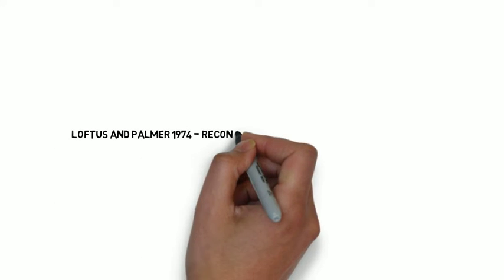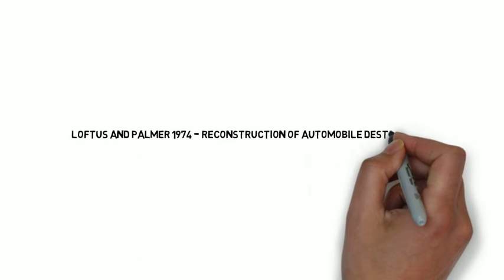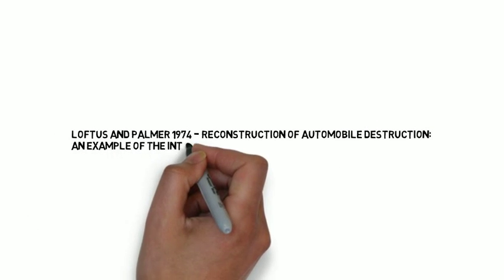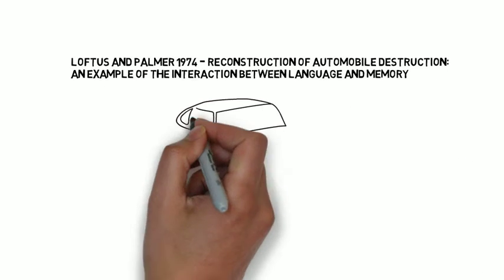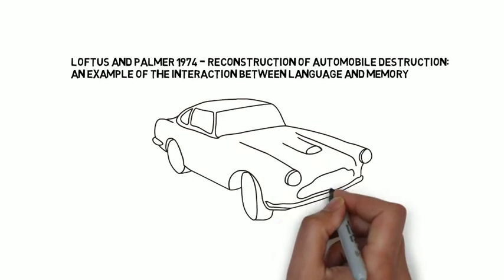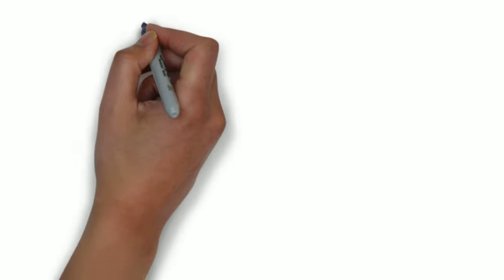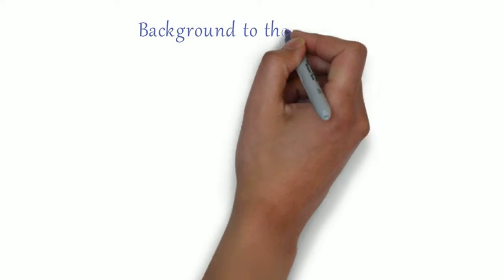Hi there, welcome to this video on Loftus and Palmer's 1974 piece of research on the reconstruction of an automobile destruction, an example of the interaction between language and memory. So lots of you probably know this as the car crash study. A little bit of background to the research just before we get going.